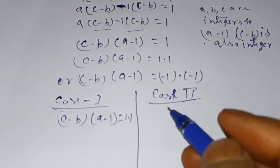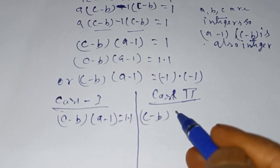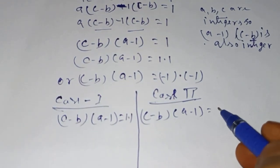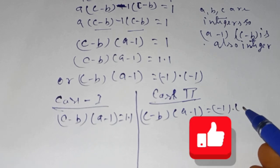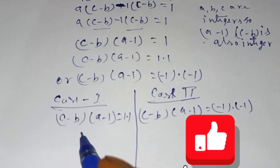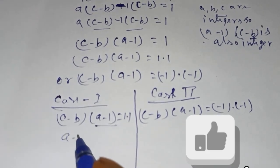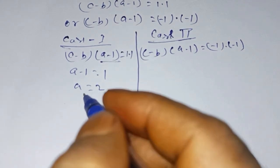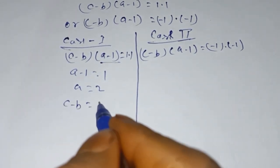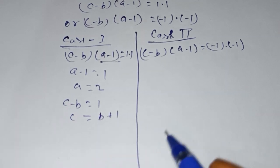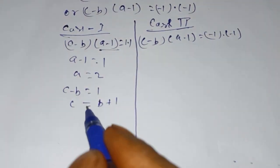Case one: (c minus b)(a minus 1) = 1 × 1. This gives a minus 1 = 1, so a = 2. And c minus b = 1, so c = b + 1.